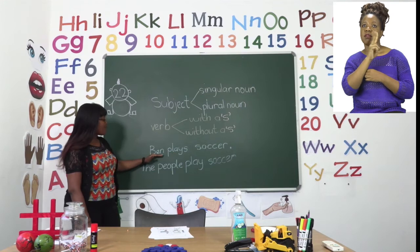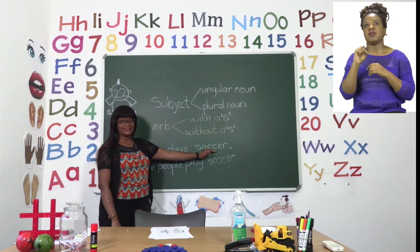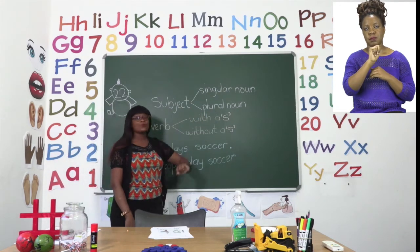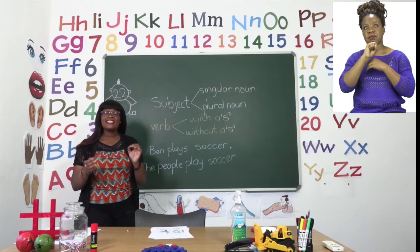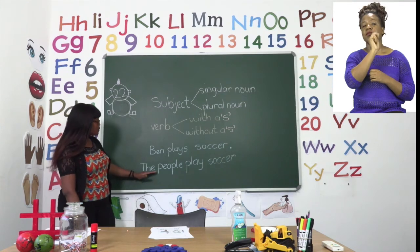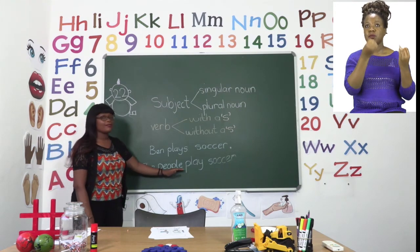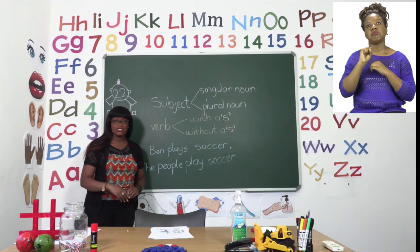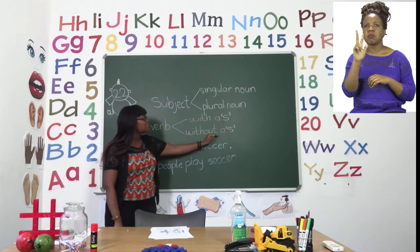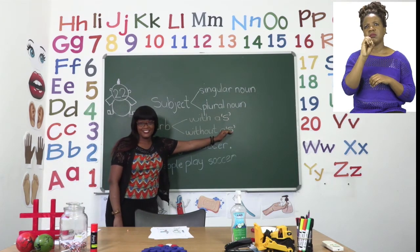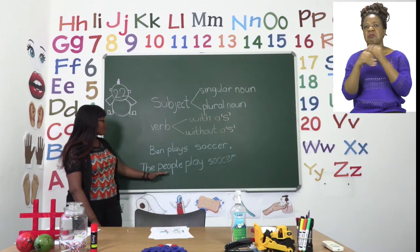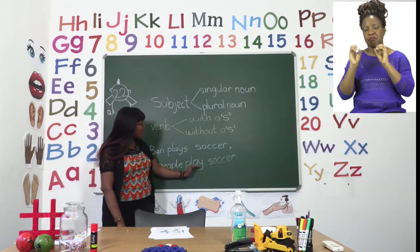Now if we have a plural noun which means two or more, they need to also agree with the verb. So our plural noun the people. People means more than one person. So if we are going to have the word people that means our verb will not have an S. So this one will be without an S. The sentence will say the people play soccer.